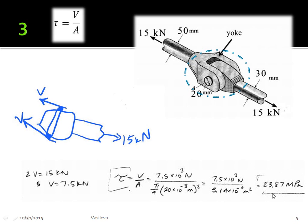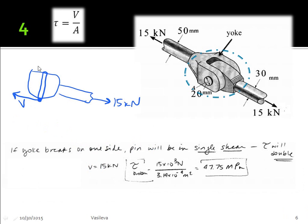Now, the second part of the question asked us what would change if we had only one pin instead of two. So if we had only one pin going through the yoke and no other pin on this side, then that simply means that V is equal to 15 kilonewtons.